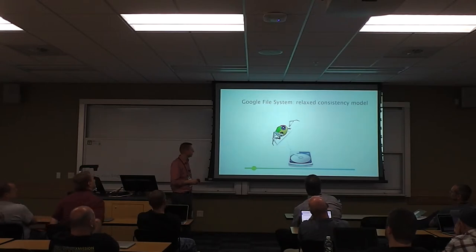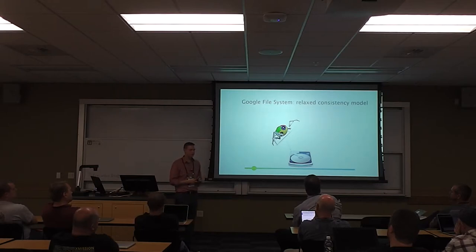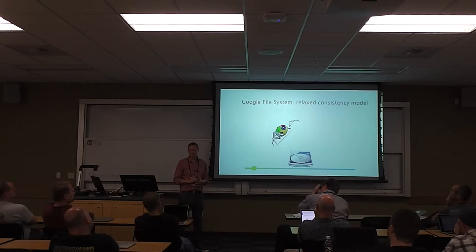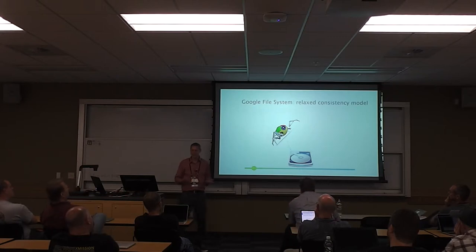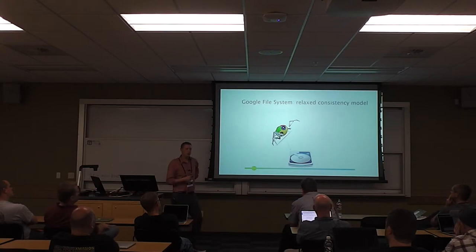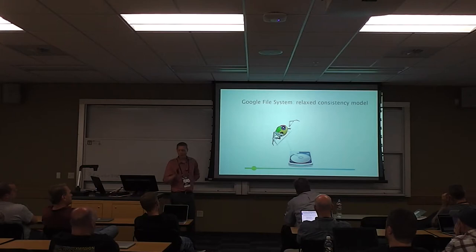Google File System is used by lots of applications at Google, including their main web crawler. The paper describes the guarantees GFS makes. It's a highly available system, but it's optimized for appending records — meaning they'll for sure append something, but they may duplicate it. They don't guarantee it won't be duplicated, and they don't guarantee it won't have random bytes mixed in. Who would ever want an application like that? But they know that if they don't make some trade-off and relax their consistency, the alternative is not incorrect behavior — it's loss of availability. The web crawler doesn't care much if it duplicates a web page while downloading it.